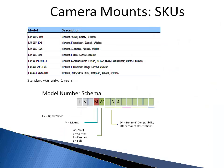These are different model numbers available for each of the mounts. The model number schema is simple. As mentioned previously, LV refers to Linear Video, M refers to mount. The next letter could be W for wall, C for corner, P for pendant, or L for pole. Lastly, the compatibility and other mount description — in this case, the model is compatible with 4-inch domes.